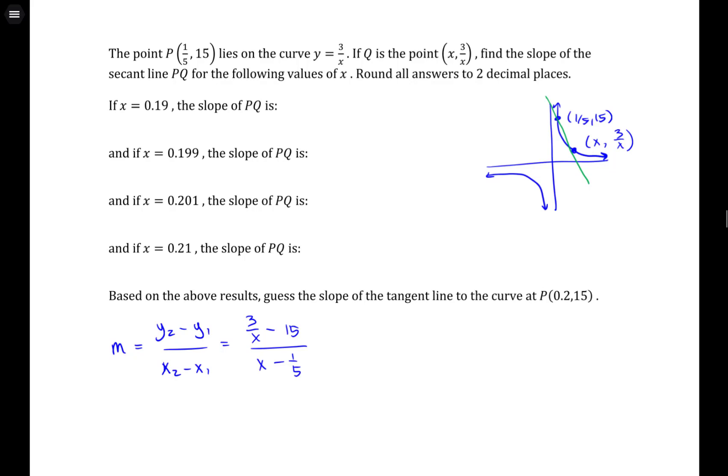And to simplify, what you could do is say, like in the top here, we could try and get a common denominator by multiplying the second fraction by x/x, and in the bottom multiply the first fraction by 5/5. So that would give me (3 - 15x)/x divided by (5x - 1)/5.